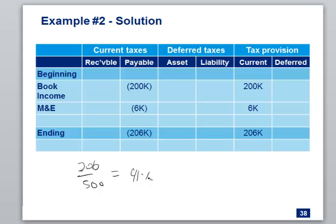Why did the effective tax rate change? It's a permanent difference. That type of expense the government does not approve of, so they only let you deduct some of it. The fact that you can't deduct all of it hurts your tax expense — you're going to permanently pay more tax. There is a skill to dealing with a non-tax person who's questioning your effective tax rate. When you're dealing with effective tax rate communications, think about how to explain that this is a permanent item, and to the extent you've permanently changed the amount of tax you owe, that affects your effective tax rate.